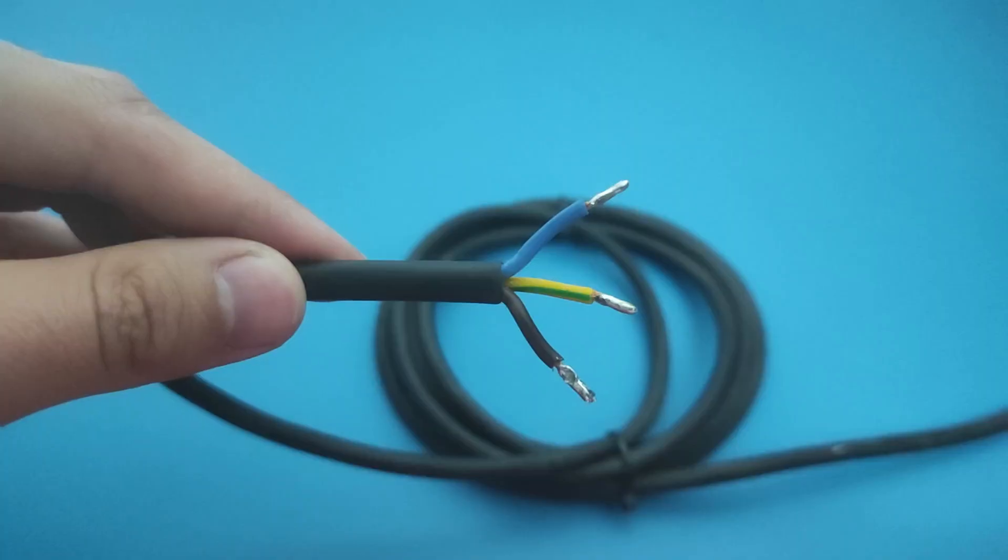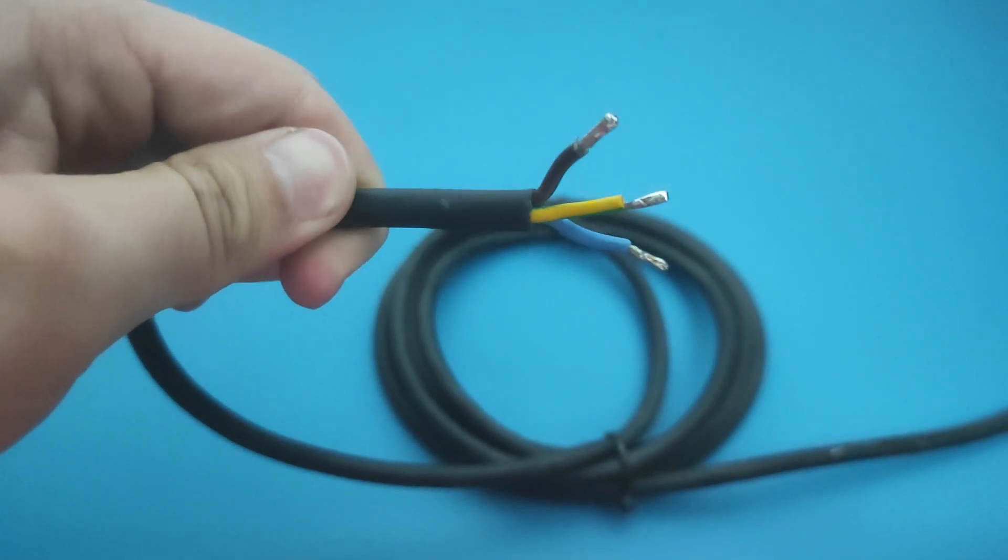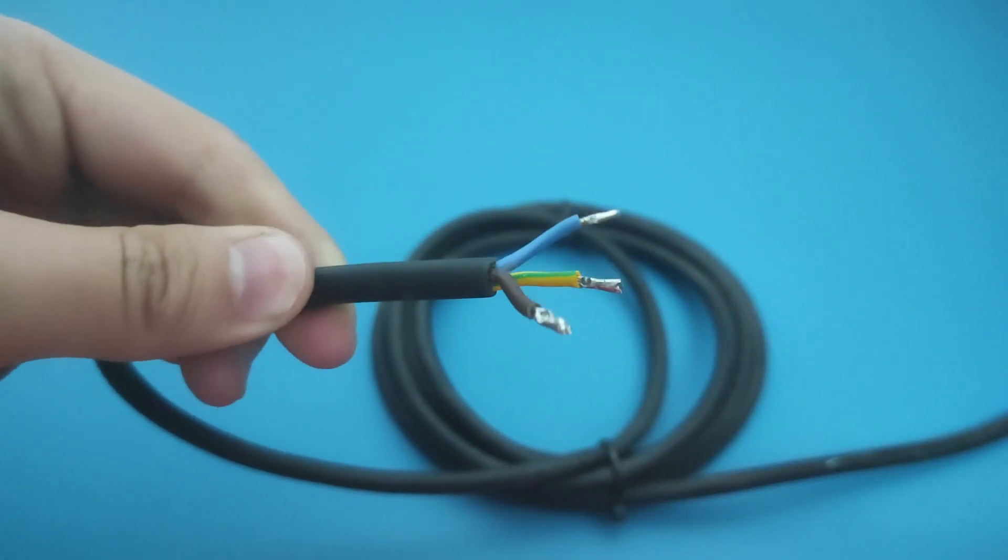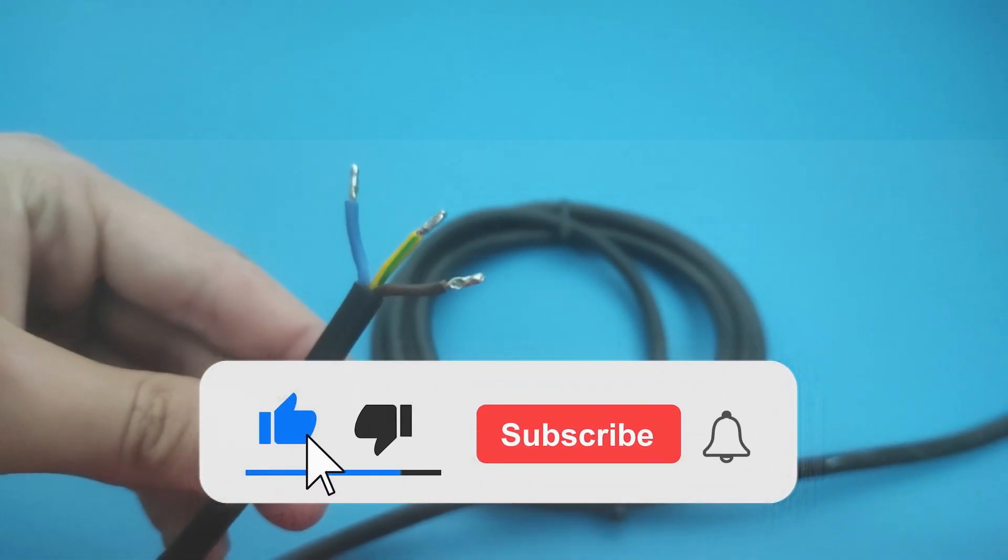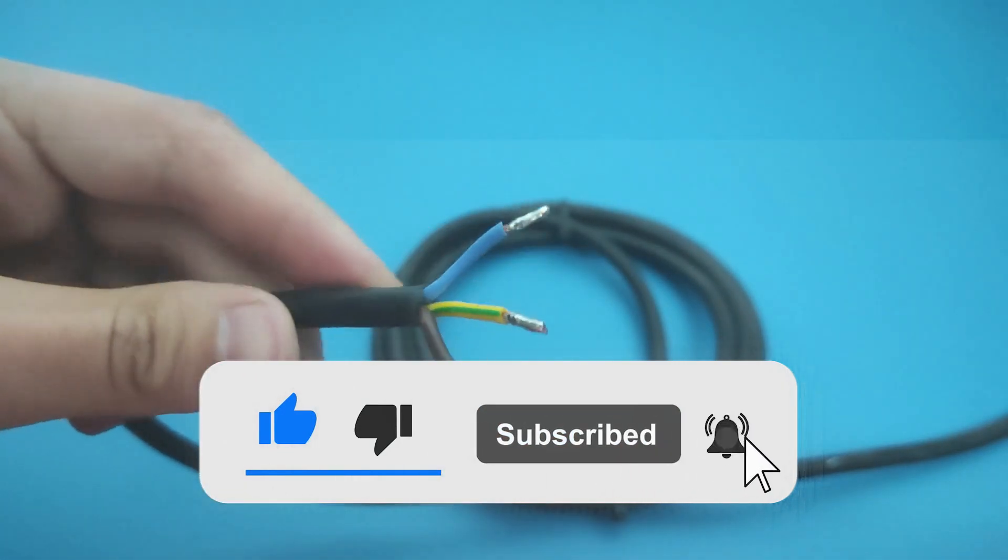The last technique you can use to identify a wire is by color. Remember that this is the least safe technique. I hope you learned how to identify hot, neutral, and ground wire. If you want to help us post videos more often, subscribe to the channel and like the video. Bye!